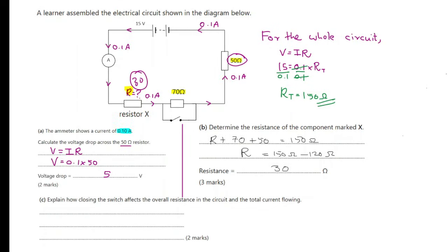Last part. Explain how closing the switch affects the overall resistance in the circuit and the total current flowing. Previously, the current's path was through resistor X, then through the 70 ohm resistor, then through the 50 ohm resistor, and back to the power supply.